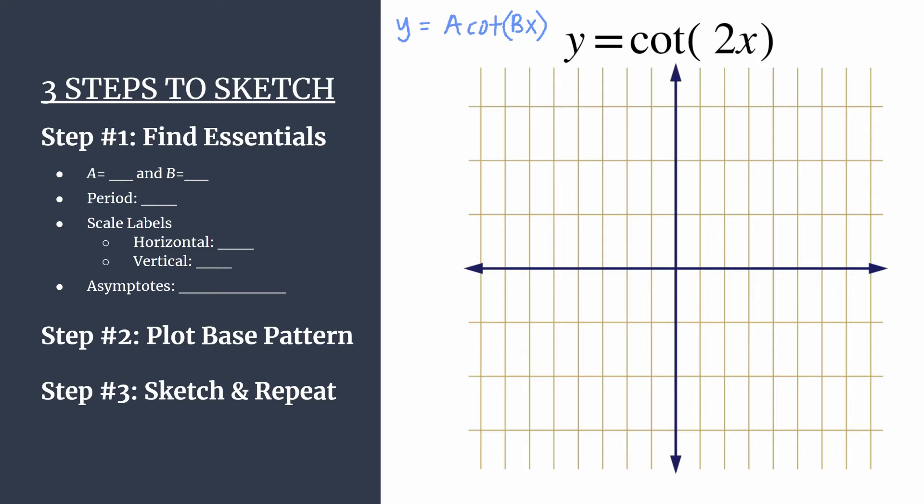So a is the coefficient in front of the cotangent function. It's an understood one here. That's going to be a key value for us when we do our base pattern. It'll be those what I like to call curve shaping points. It'll help us get those. And then b we see is the coefficient of x. In this case, that's a 2.